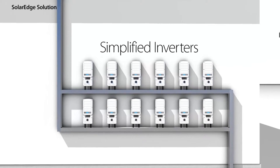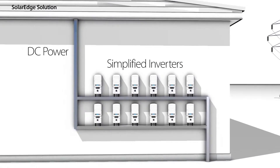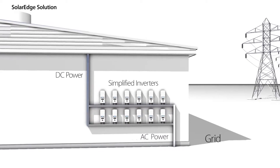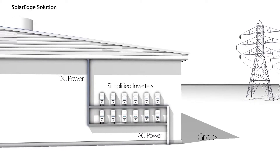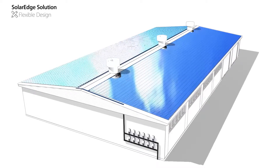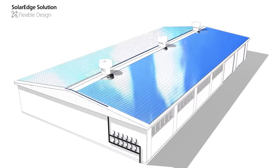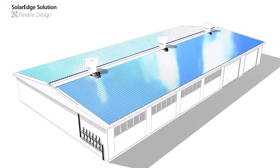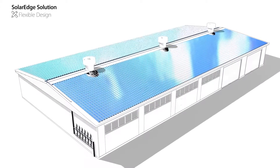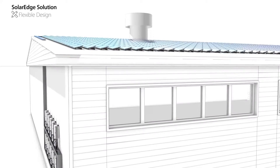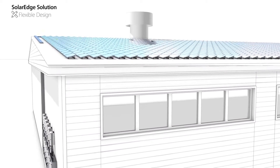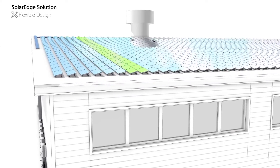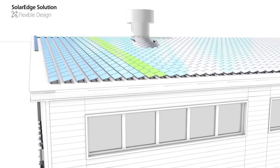The simplified inverter is installed similarly to a traditional string inverter, but it is only responsible for DC to AC inversion and grid connection. In comparison to the limited design of string inverters, designers of SolarEdge commercial systems enjoy great flexibility and are able to fit more panels in a given space. Additionally, the SolarEdge solution enables connection of much longer strings, which significantly lowers the number of strings per system and reduces balance of system costs.